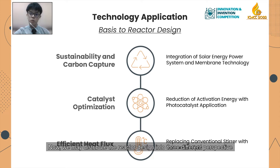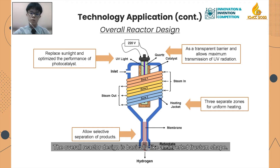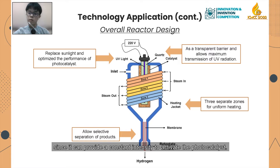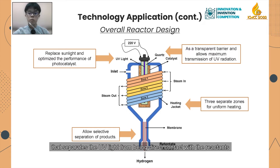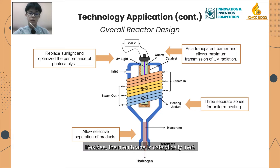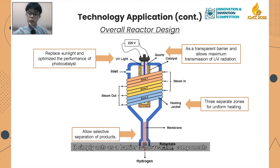We may distribute the reactor design into three different perspectives: sustainability and carbon capture, catalyst optimization, and efficient heat flux. The overall reactor design features a clear light and inverted frustum shape. UV light is used to replace sunlight for photocatalysis, as it can provide a constant intensity to activate the photocatalytic process. A quartz window or quartz immersion well acts as a transparent barrier separating the UV light from direct contact with the reactants, while allowing maximum transmission of UV radiation. The heating jacket is injected with steam in three separated zones to ensure uniform heating and avoid large temperature gradients. The membrane is catalytically inert and does not participate in the reaction directly; it simply acts as a barrier allowing selective separation of desired products from side products.